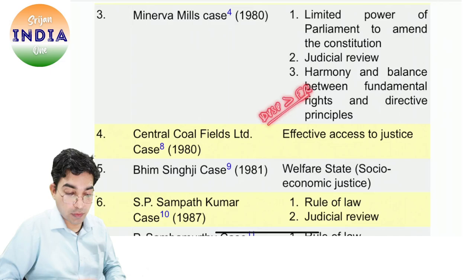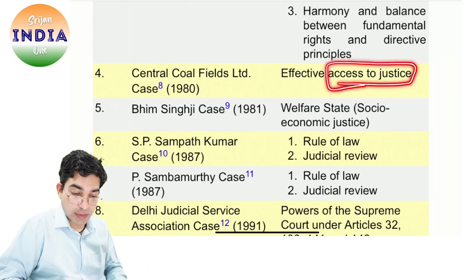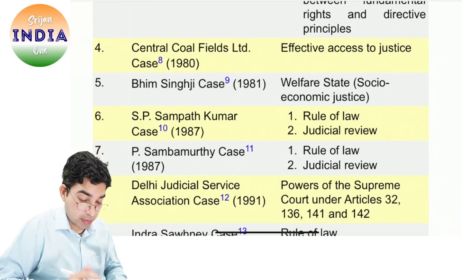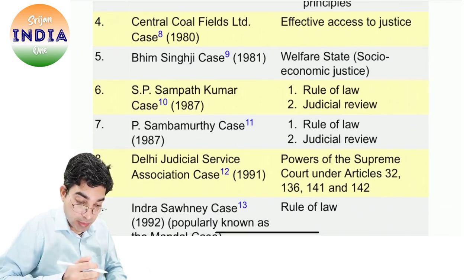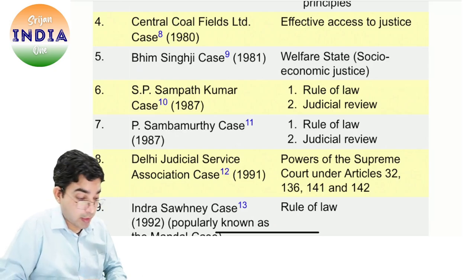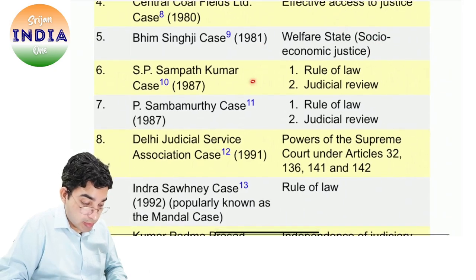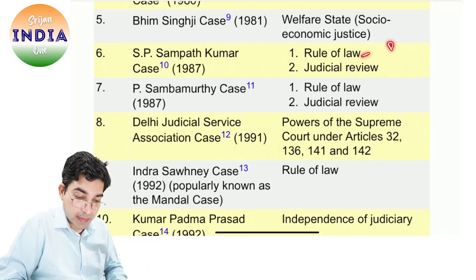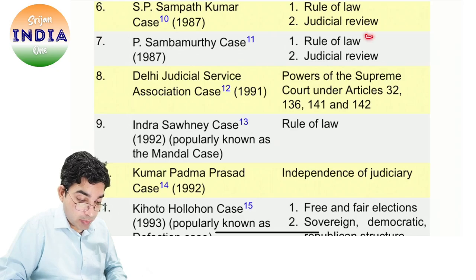DPSP mein kuch aise hain jinko priority FR pe diya hua hai — un DPSP ke naam batao. Central Coal Field case mein bola — access to justice sabko hona chahiye. Tabhi hum NALSA aur lok adalat dekhte hain — free aur affordable justice milna zaroori hai. Justice delayed is justice denied, justice hurried is justice buried. Phir Bhim Singh case aaya — welfare state ki baat ki, social economic justice. Sampat Kumar case aaya — rule of law hai, DICE ke teen principles hote hain — judicial review bhi hai.